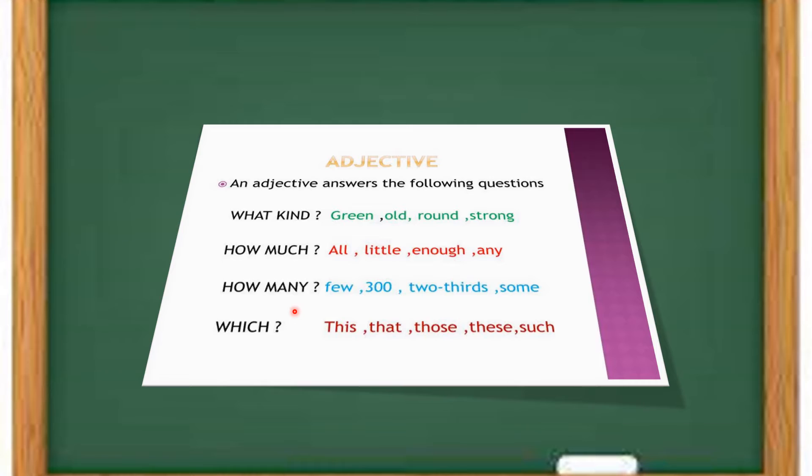The examples of how many could be few, any number or any fractions like one-third, two-third, and some. And the answer for the question which could be this one, that one, those, these, such.